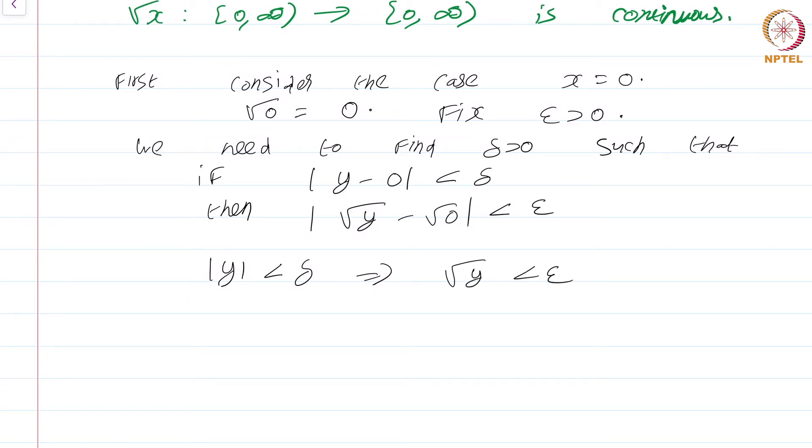I can ignore the modulus here also. Now, if I set delta equal to epsilon squared, then y is less than epsilon squared implies square root of y is less than epsilon. So showing continuity at the point 0 turned out to be quite easy.